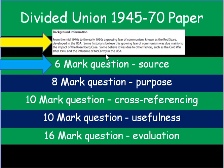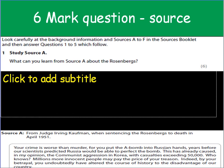So here we have some background that even if we knew nothing about what was going on, it at least provides us with some clues. Now the first question you'll always have is this six mark question which asks you to look at source A. So let's have a look at that right now. Six mark question: Study source A. What can you learn from source A about the Rosenbergs? So in your source booklet you'll have source A.